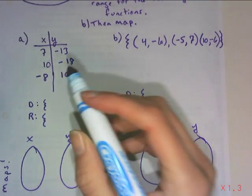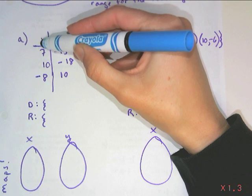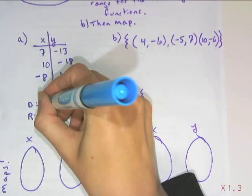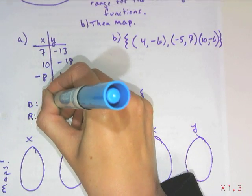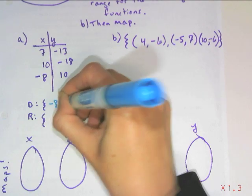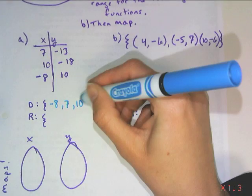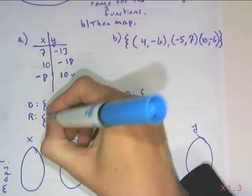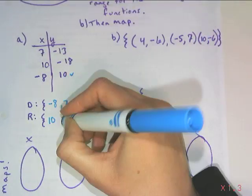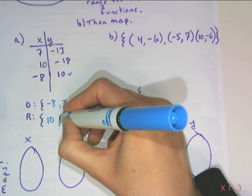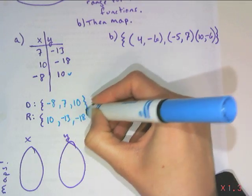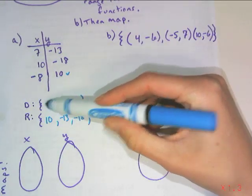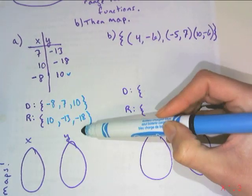So for A, the domains are my set of inputs. So I'm going to say this is negative eight, seven, ten. You don't have to put them in order, but I like to. So negative eight goes with ten, so our range is the outputs. And then seven is a negative thirteen, and ten goes with a negative. So our domain is a set of inputs, the range is a set of outputs.